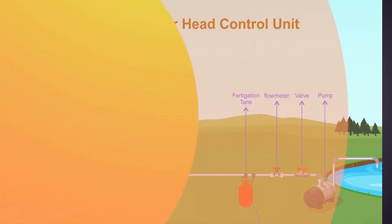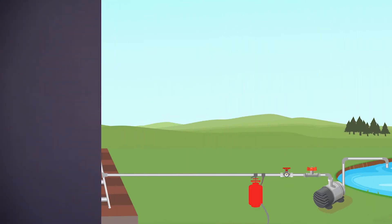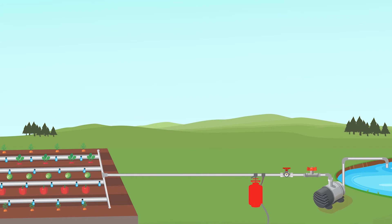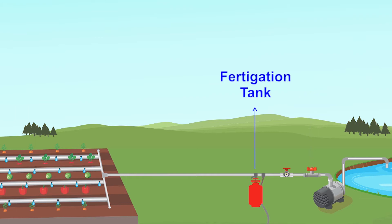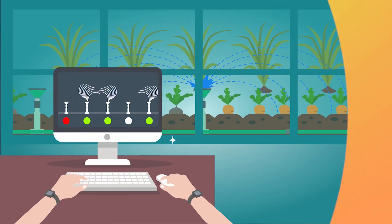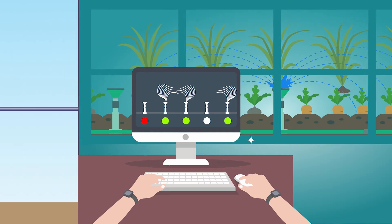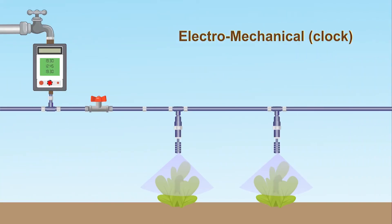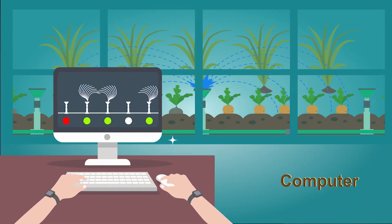The control head or head control unit is usually located close to the water supply. A typical control station includes the pump, backflow prevention system (valves), chemical injection system for fertilizers, chlorine or other chemicals, and a combination of different filters. A mainline valve and flow meter are also included in the control head. It can be controlled manually or automatically — automatic control systems can be electromechanical, clock-based, or electronic-based such as computers. The head control unit turns the automatic valves on or off through control signals.